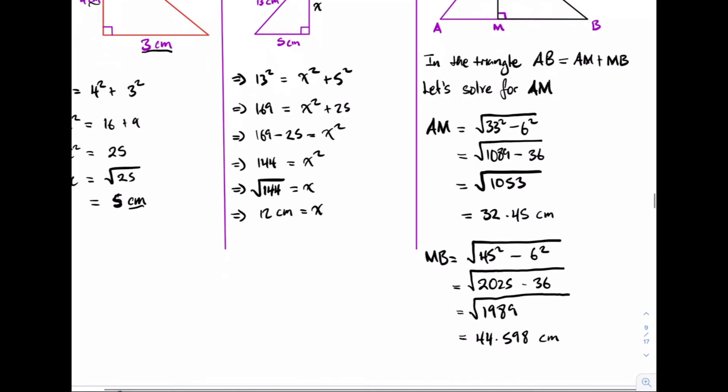So now we can find AB by adding these two answers together. So thus, we end up with 77.048.